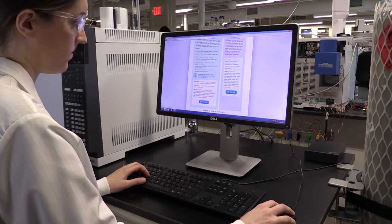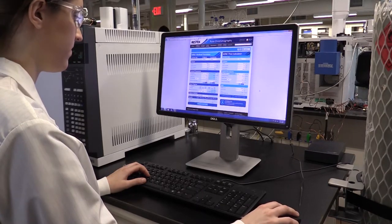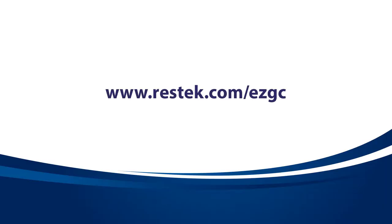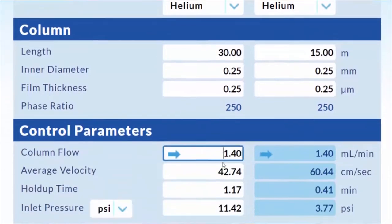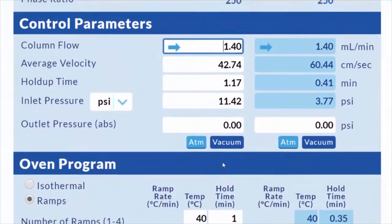Existing methods can also be sped up by transferring them to scaled down columns using the EZGC method translator, which can be found at www.restek.com/EZGC. This free online tool calculates the ramp rates and other conditions that will produce an equivalent separation in less time.